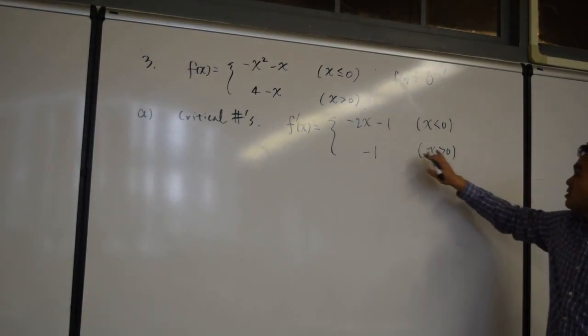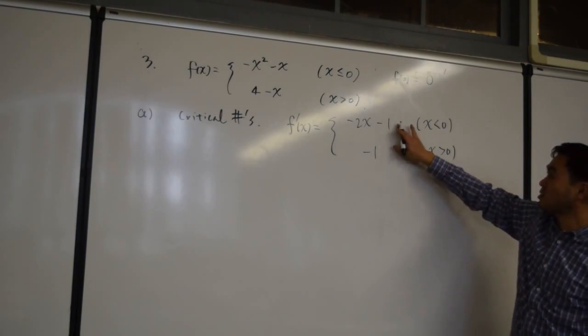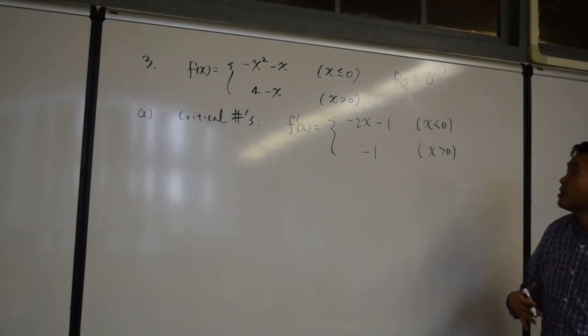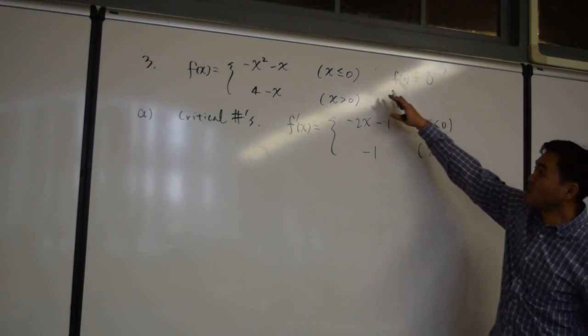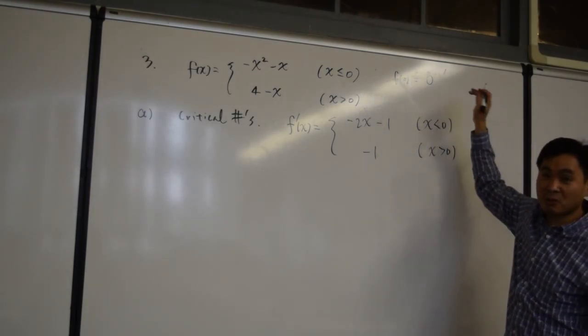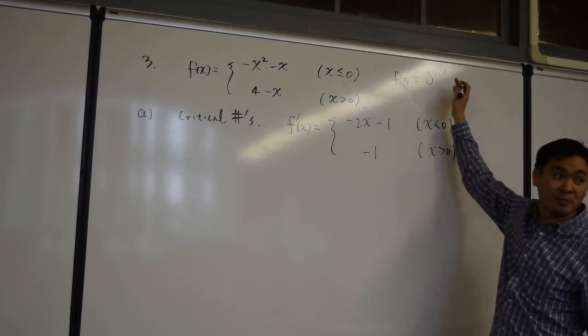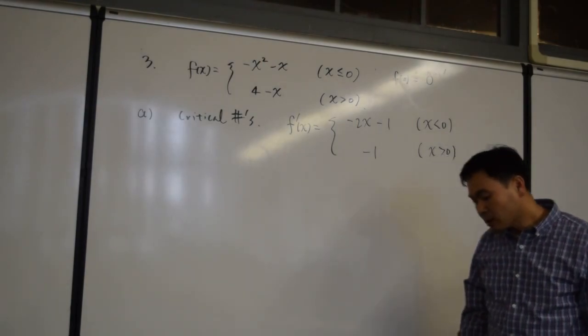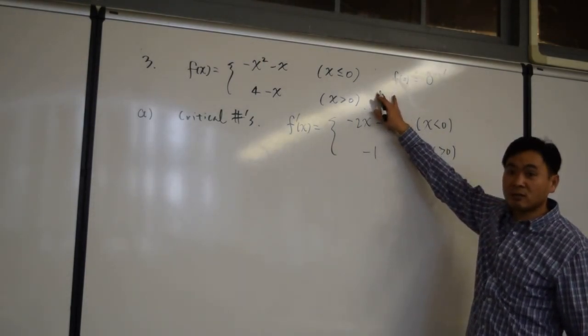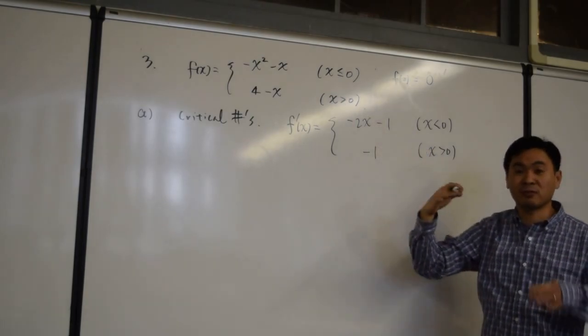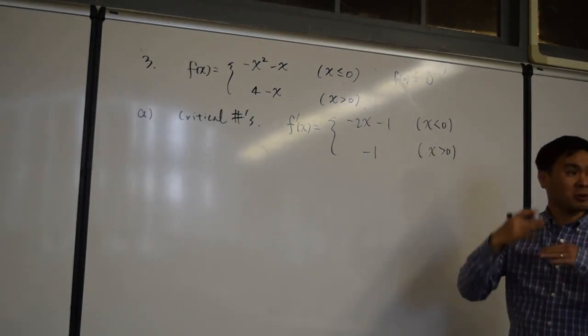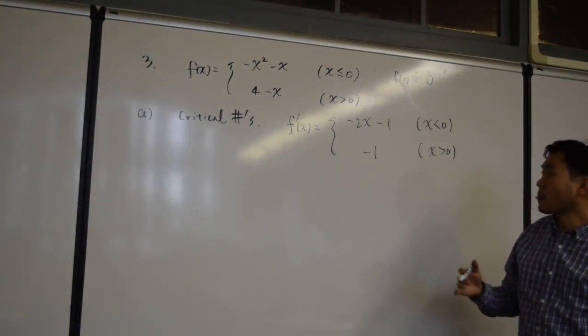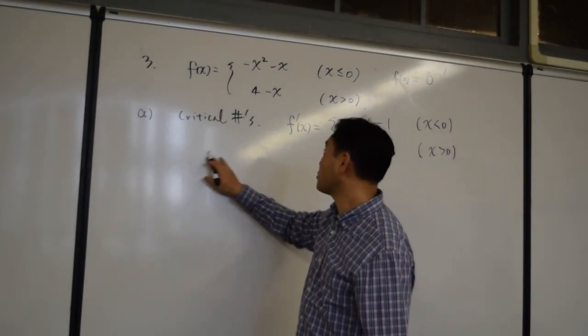Although if you plug in zero here and zero there, it seems like they match, so the left derivative and the right derivative seems to match. There's a critical problem with this function when you try to find the derivative at zero. What is it? It has a jump discontinuity. If the function has a jump discontinuity or if the function is not continuous, is it differentiable at that point? No. If the function is not continuous, it's not differentiable.